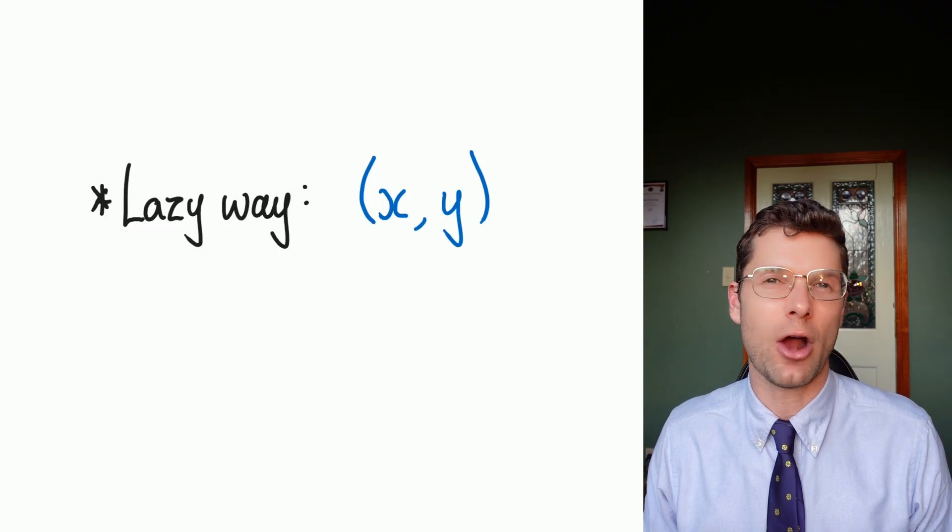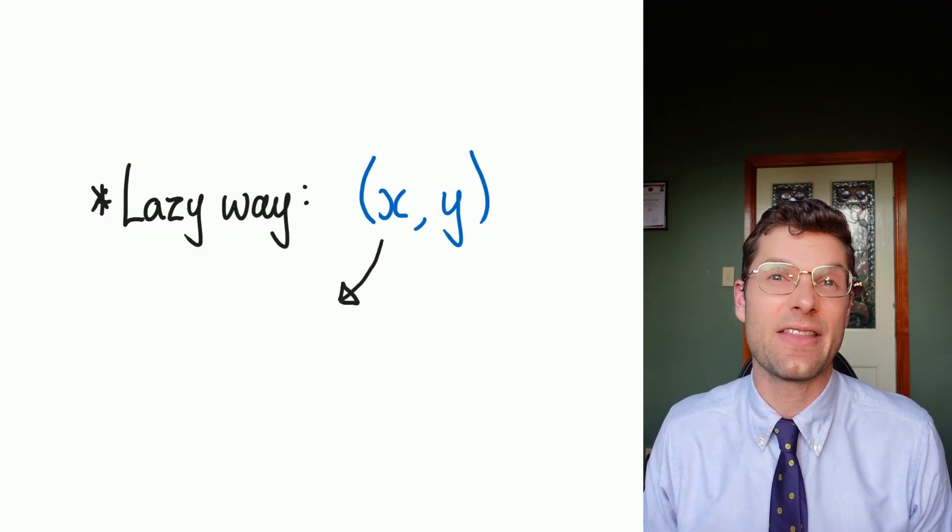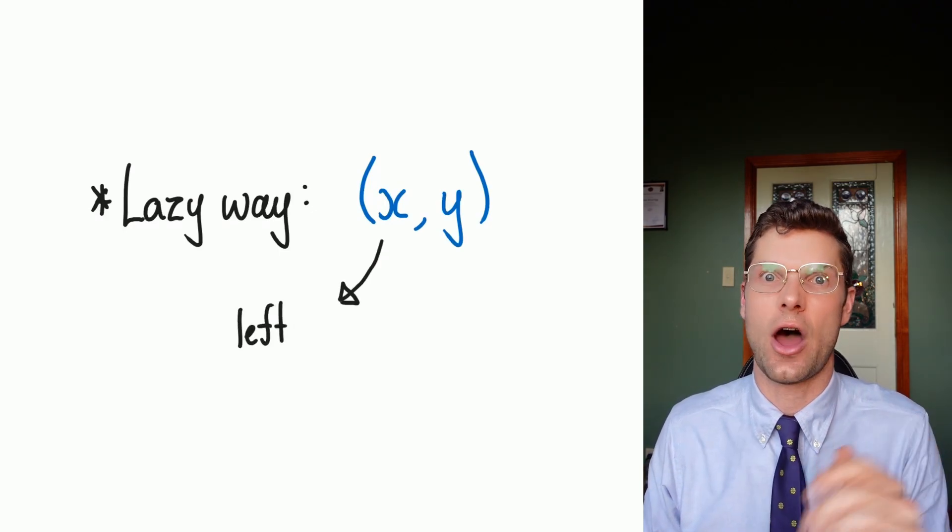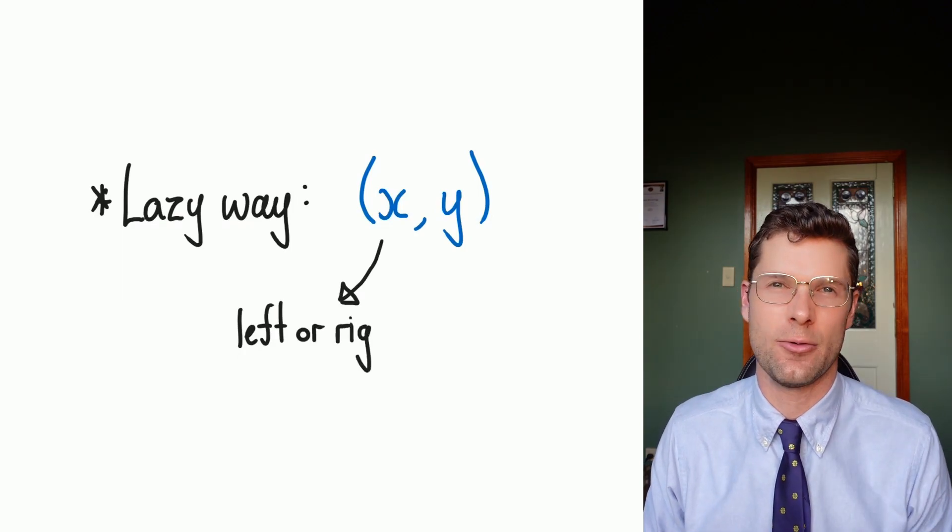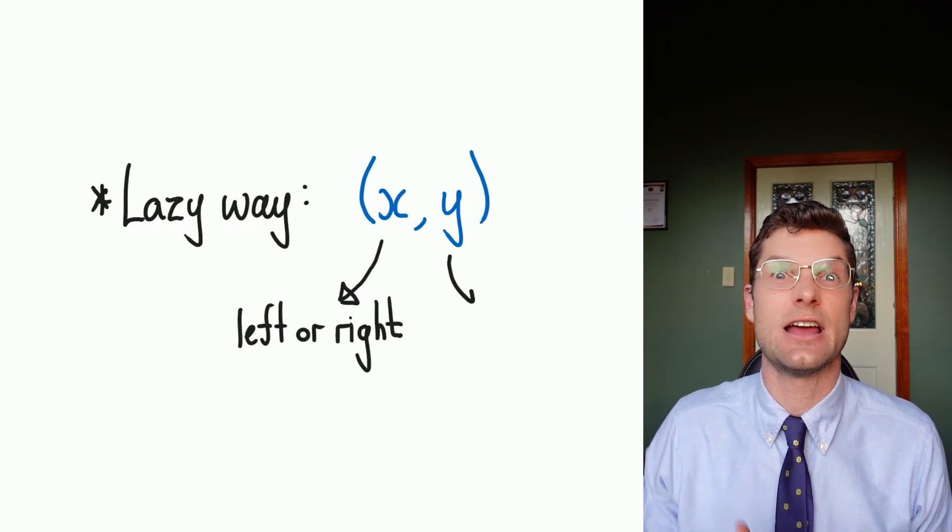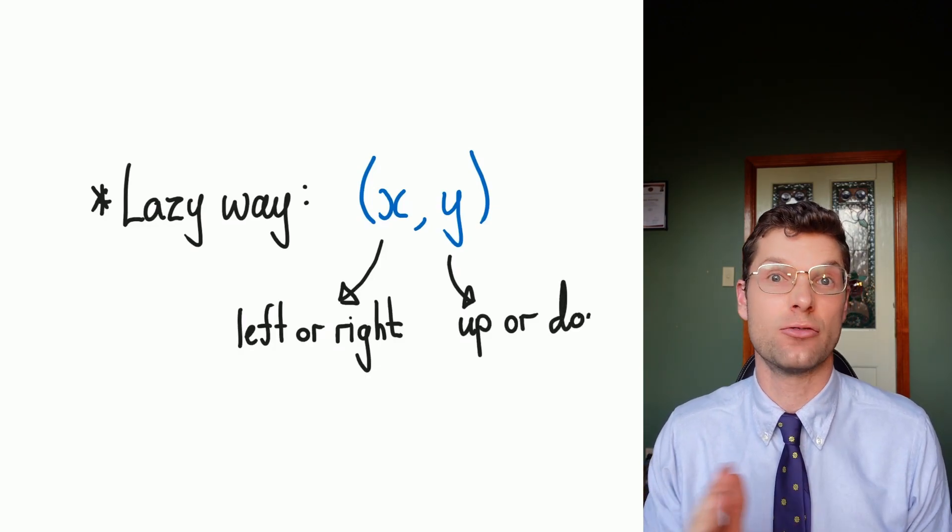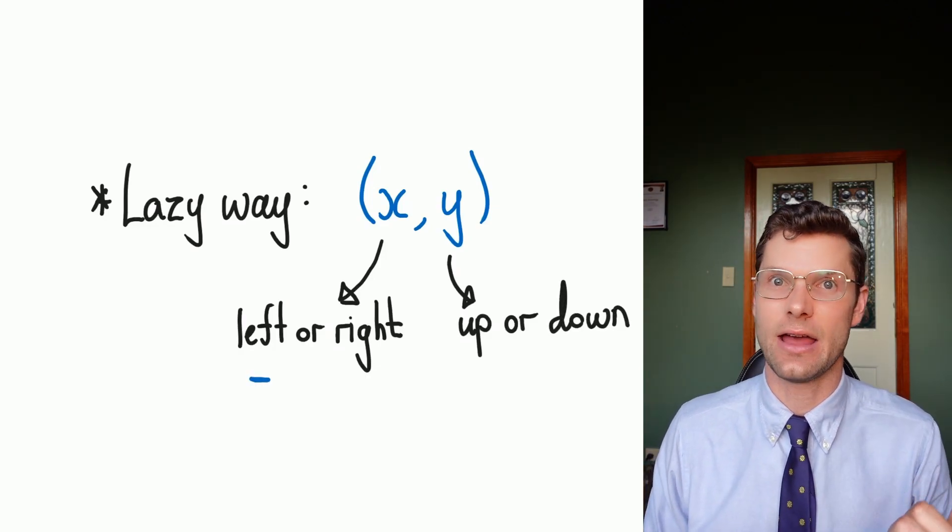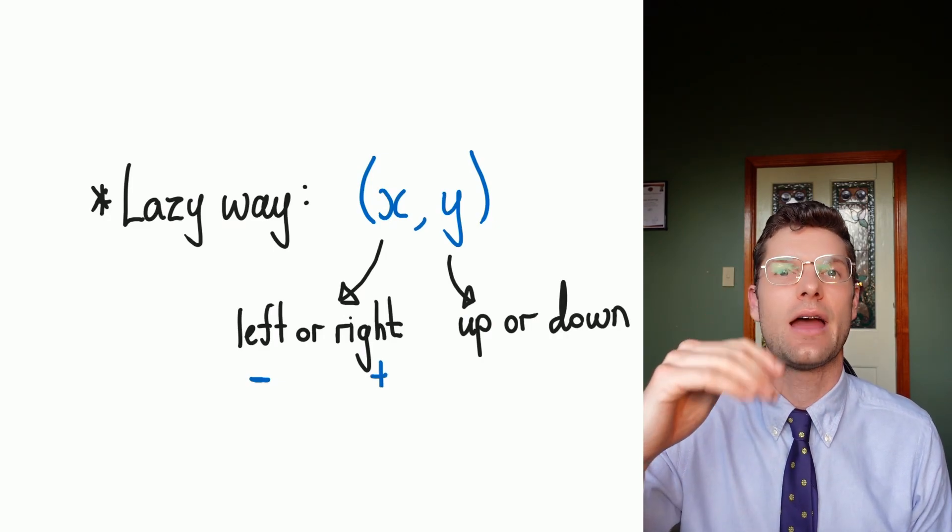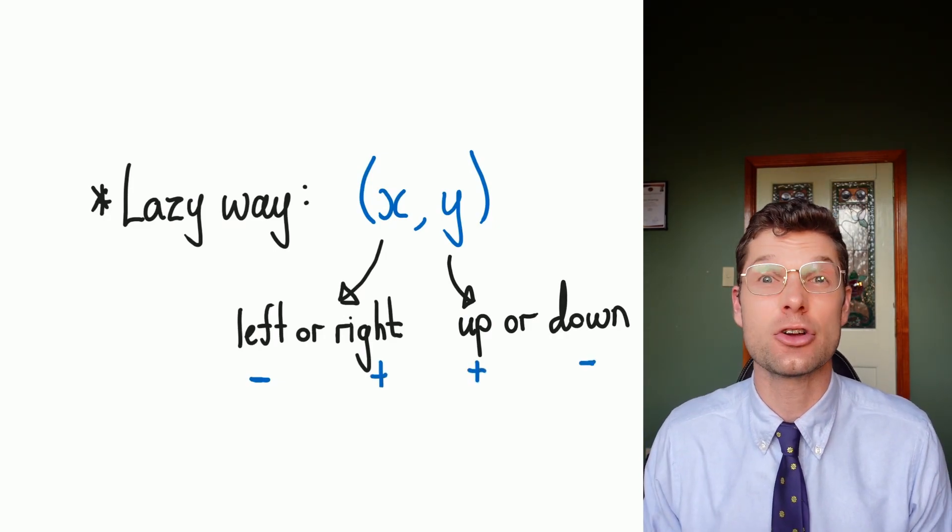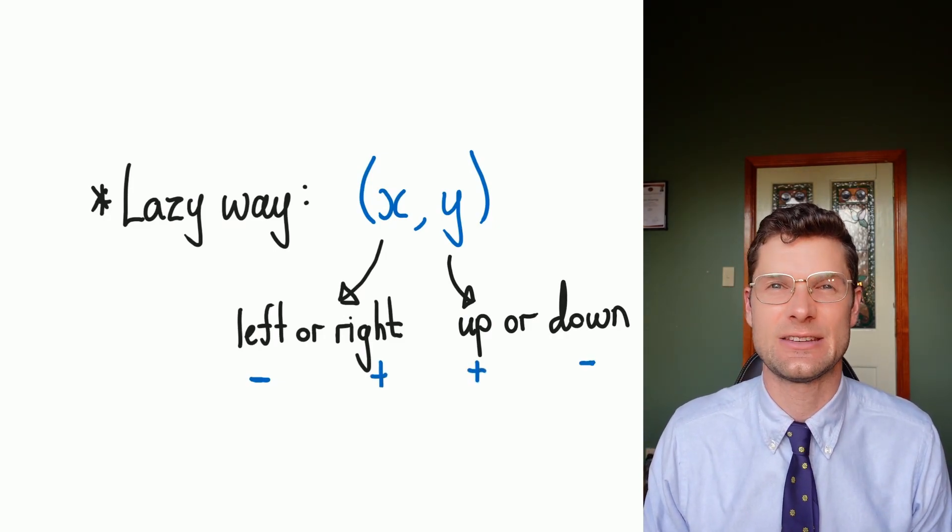The lazy way to write this is x comma y. The x tells us how far to the side are we or how far across are we, and then that y value just tells us how far up or down. Remember that positive x is to the right and negative x is to the left. Positive y is up and negative y is down. As long as you're on top of that, you're gonna absolutely smash this lesson.